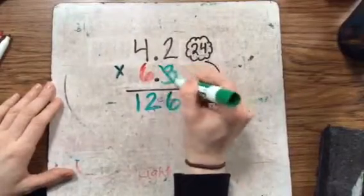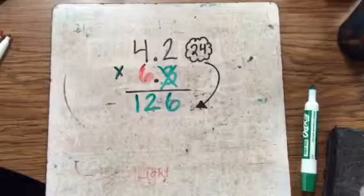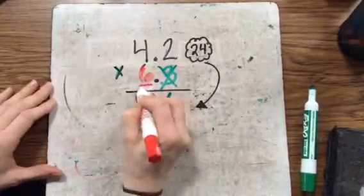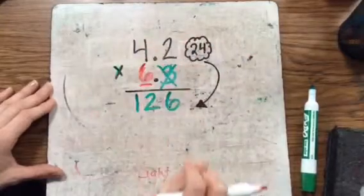I've already multiplied my 3, so I'm going to cross it out to make sure I don't get confused. And I'm now going to work on the 6. Notice I started at the right and I'm moving to the left.